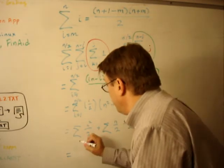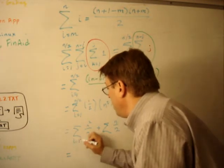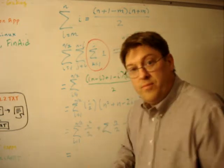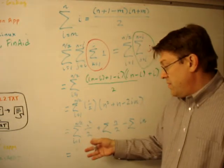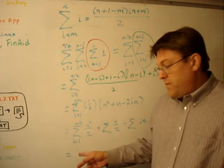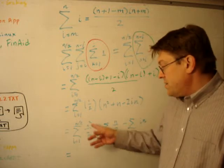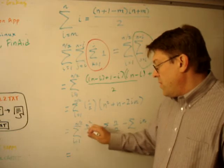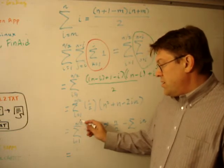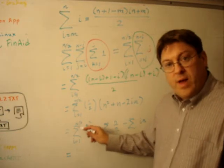Now, this is the sum from i equals 1 to n over 2. So what's the sum from i equals 1 to n over 2 of any constant value, which this is a constant value? It's just this top value times that.